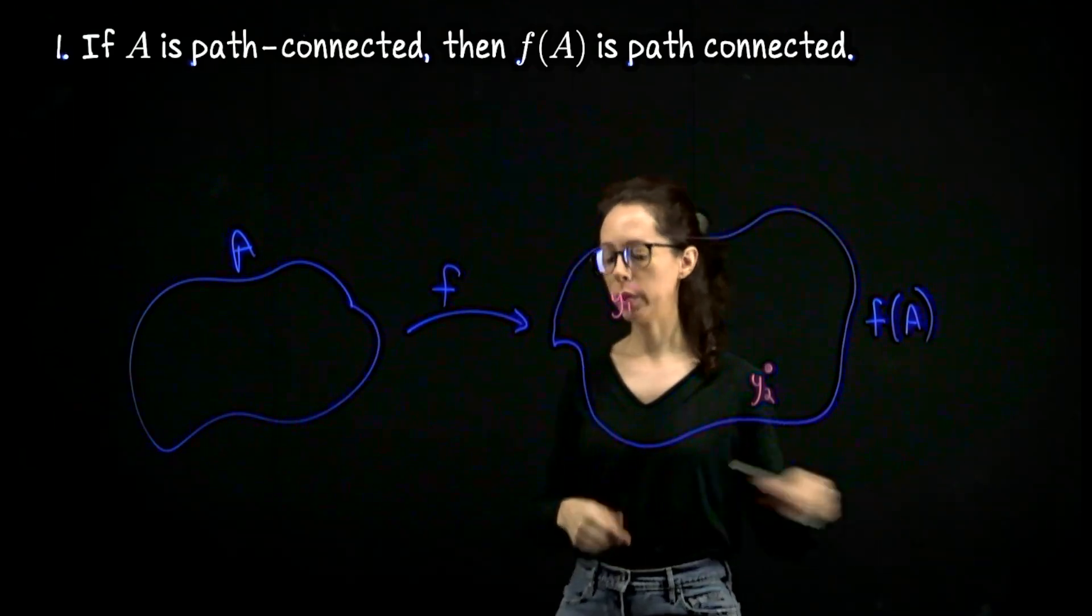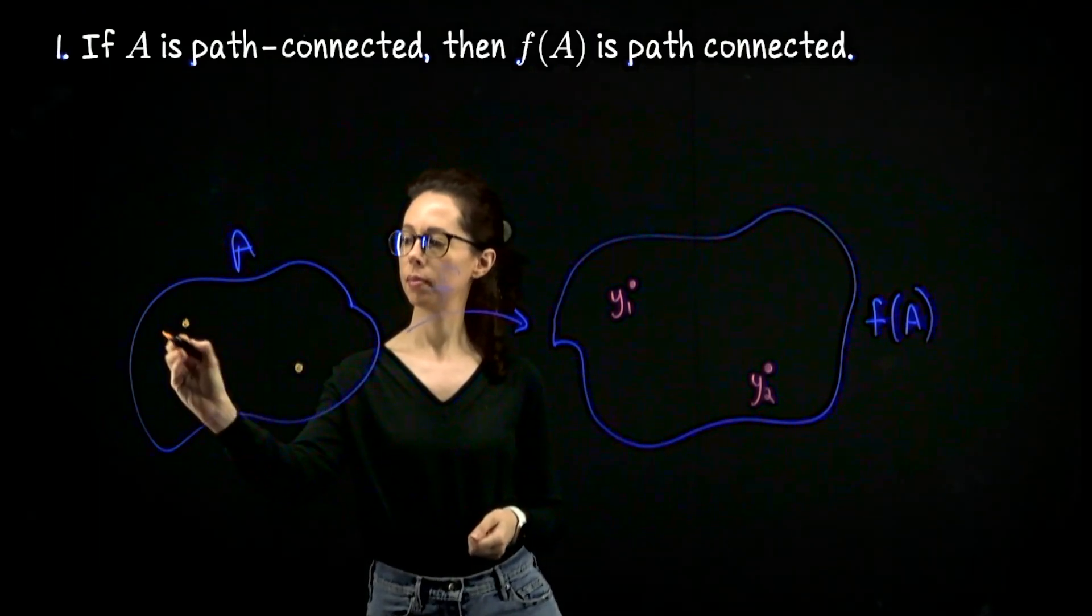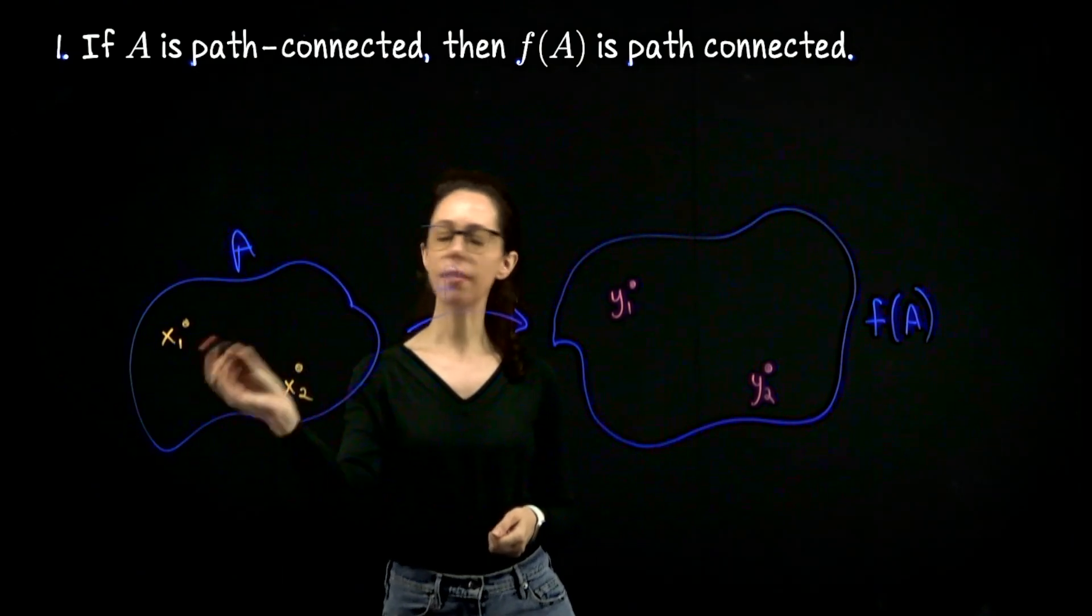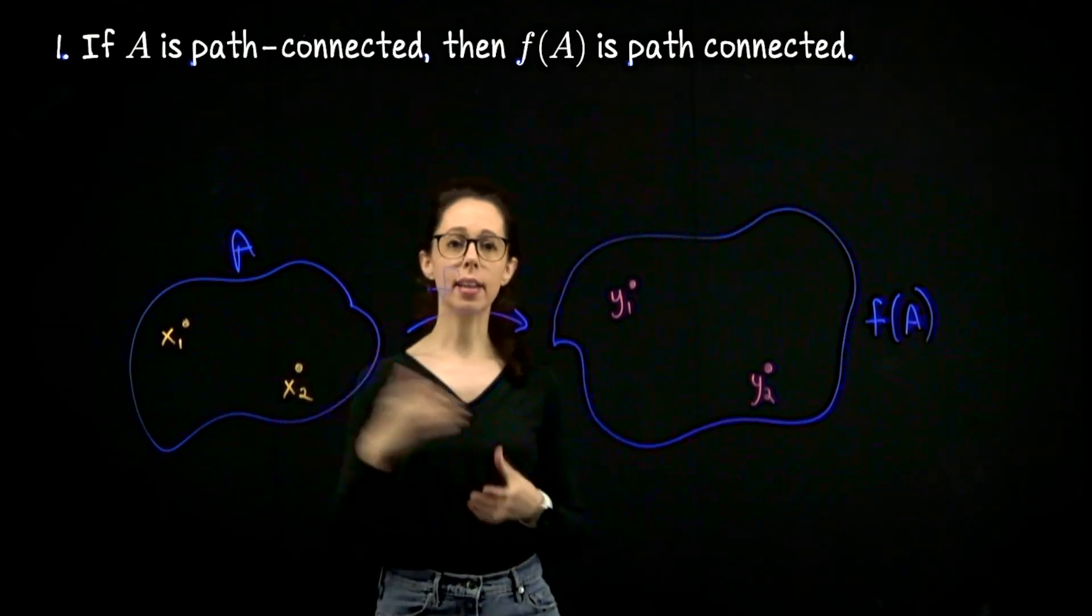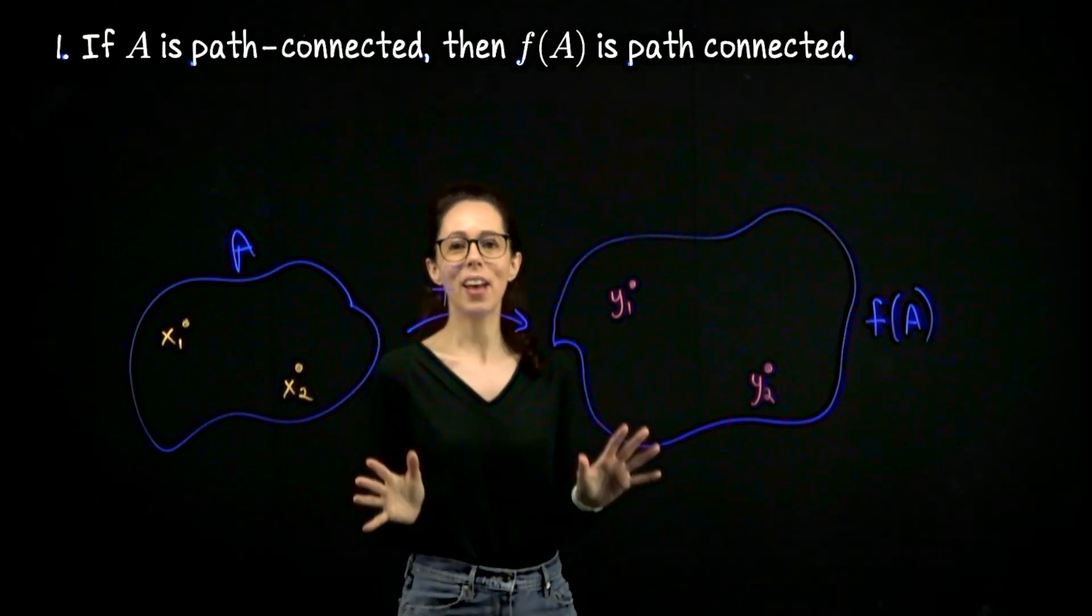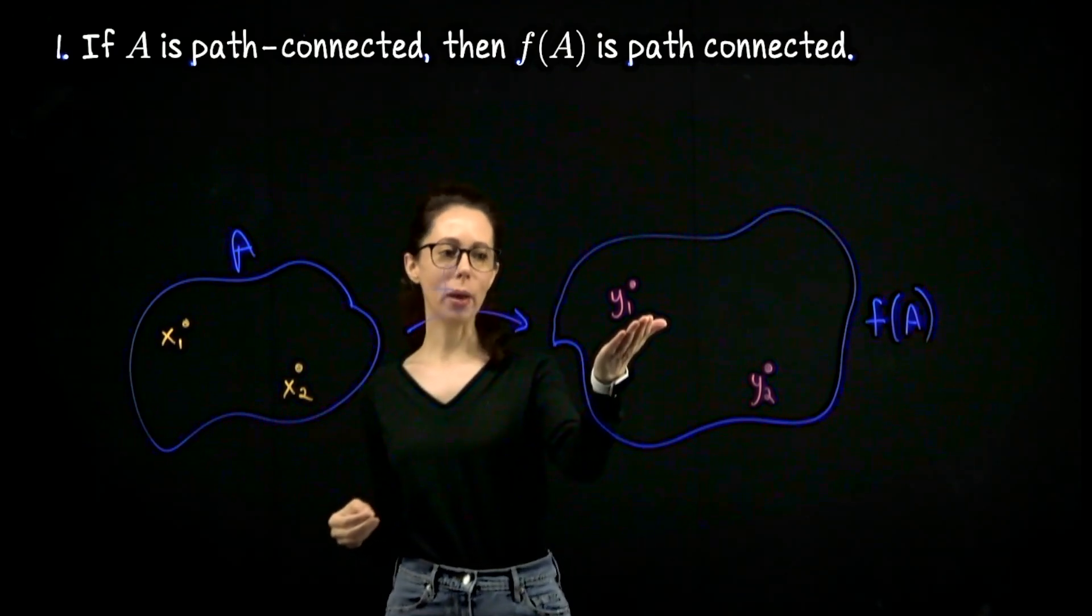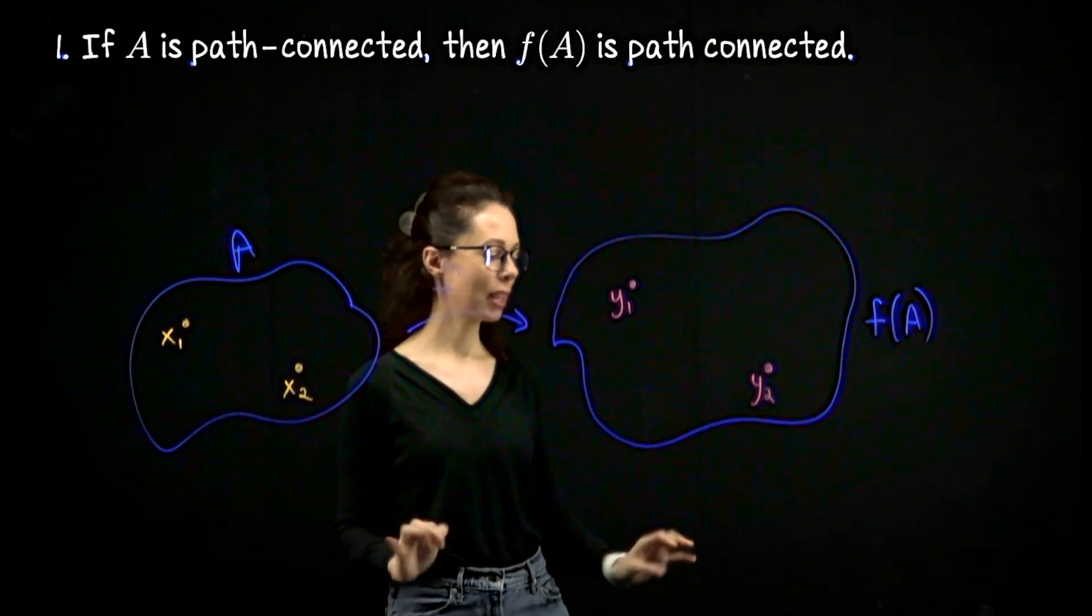So back in the domain, we will identify an x1 and an x2, where f of x1 is y1 and f of x2 is y2. This choice here is not necessarily unique because perhaps 10 inputs get mapped to y1. That's okay. The pre-image of y1 may consist of more than one point, but we will just pick one point.